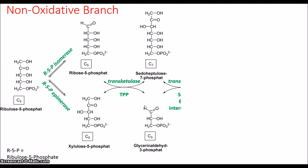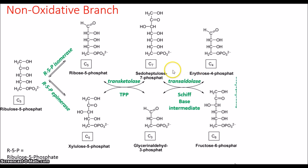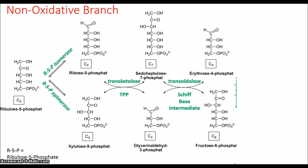Next, saliheptalose 7-phosphate and grisoldahyte 3-phosphate can undergo another reaction to create erythrose 4-phosphate and fructose 6-phosphate. So 7 + 3 = 10, and 4 + 6 = 10 — we have the same number of carbons on both sides. This reaction involves a Schiff base intermediate. The enzyme doing this is transaldolase. So the first enzyme was transketylase and then transaldolase.